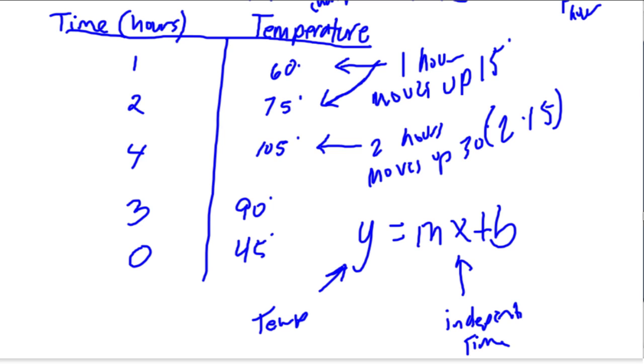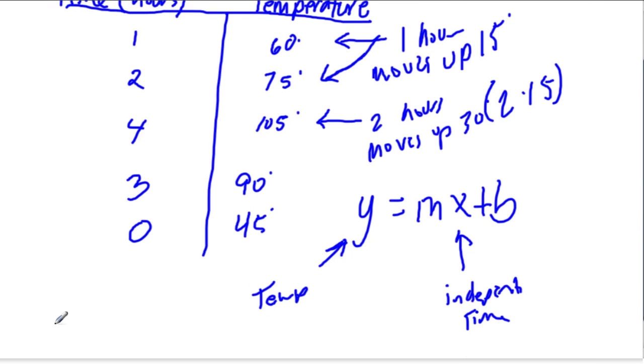And now we can start to write our equation. We should have y equals 15 times x, the number of hours. So if we want to know what the temperature is, we do 15 times the number of hours, plus, well, when we have zero hours, what temperature are we at? Well, we're at zero or 45 degrees. So here's our equation.